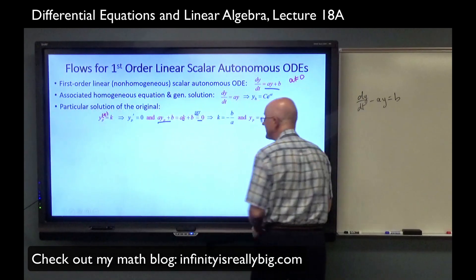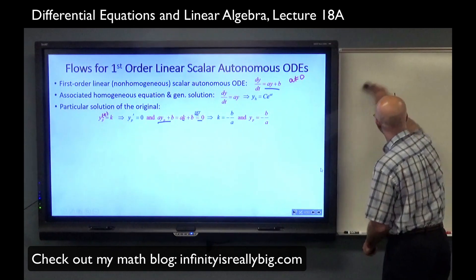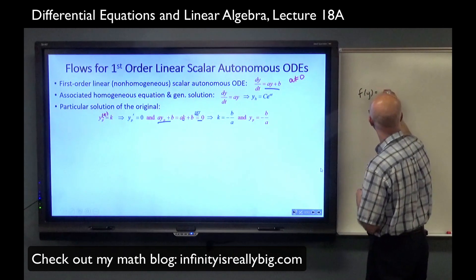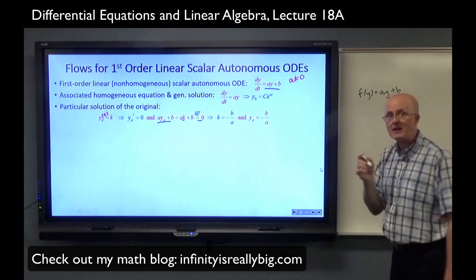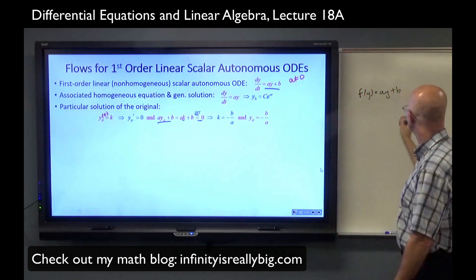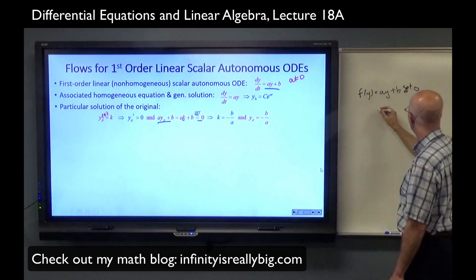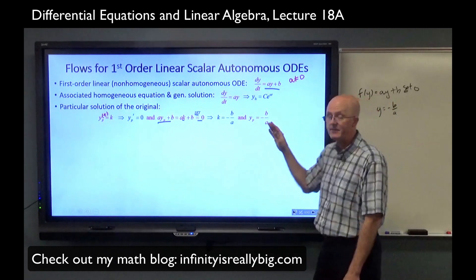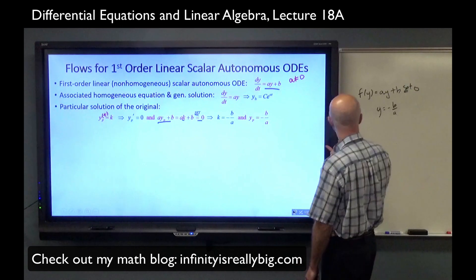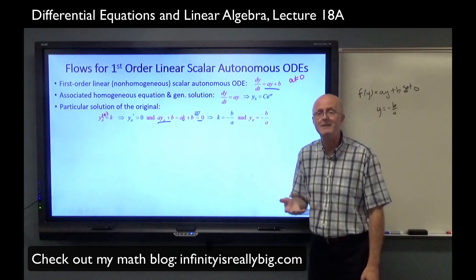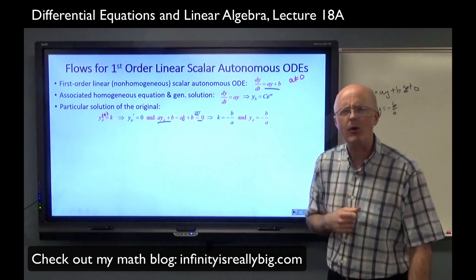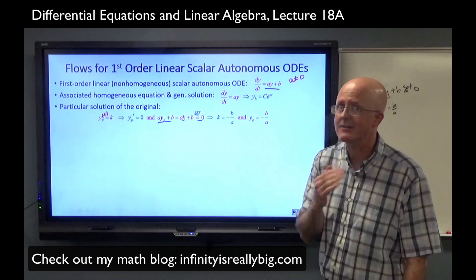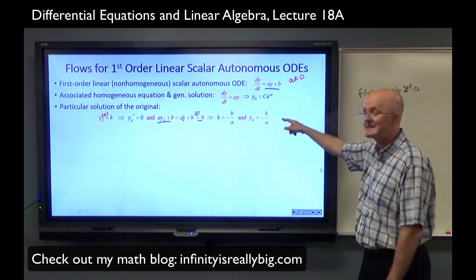That should make sense if you think about phase lines. When you look for equilibrium points on phase lines, you set the right-hand side equal to zero and solve for y, and you get y equals negative b over a. The particular solution — this constant function of t whose graph is a horizontal line — is the equilibrium solution, and on the phase line it corresponds to the equilibrium point. Whether it's a sink or a source depends on whether a is positive or negative.